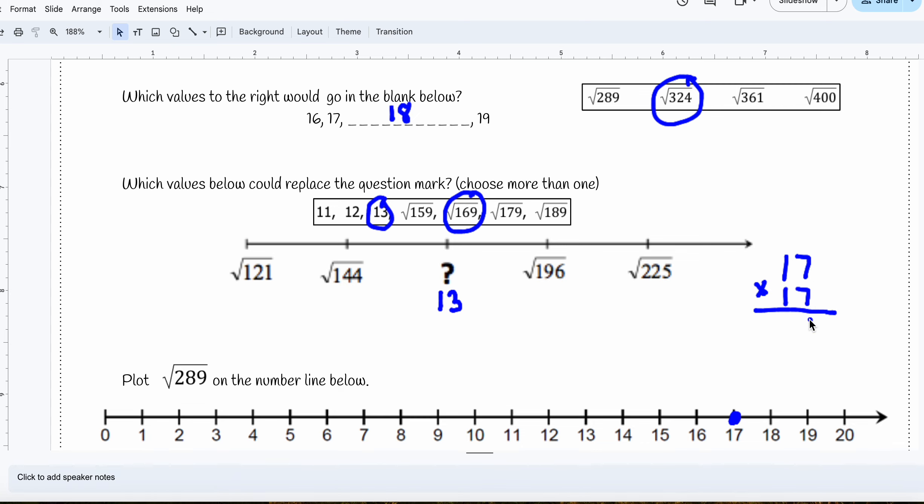So seven times seven is 49, carry the four, seven times one is seven, plus four is 11. Drop in your zero for your placeholder, because now I'm multiplying the tens place. One times seven is seven, and one times one is one. And I add this up. Nine plus zero is nine, one plus seven is eight, and one plus one is two. So this would verify that the square root of 289 is in fact 17.